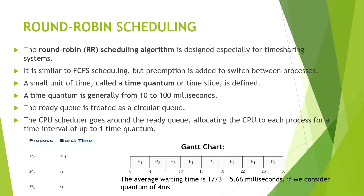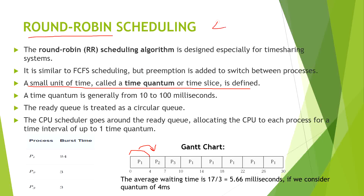To keep this disadvantage away from our scheduling process, we implement round-robin scheduling. Round-robin, irrespective of priority, transfers the handle from one process to another after one quantum. A quantum is the smallest unit of time, called a time quantum or time slice. Let's say we give a quantum of four milliseconds.